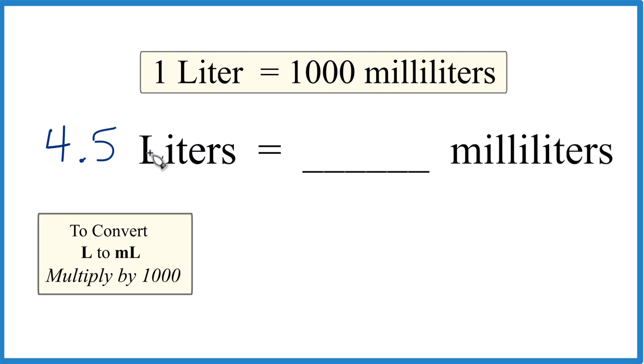So if we had 4.5, it's going to be a lot greater than a thousand, our final answer. To convert from liters to milliliters, all we really need to do is multiply liters times a thousand.